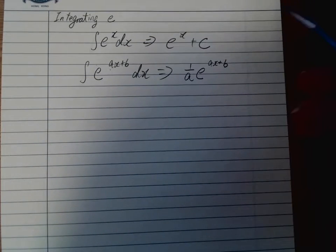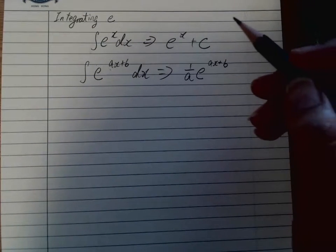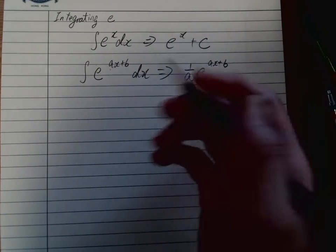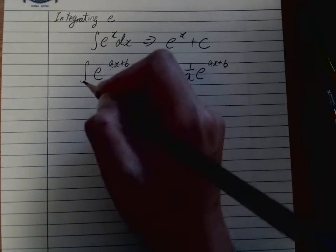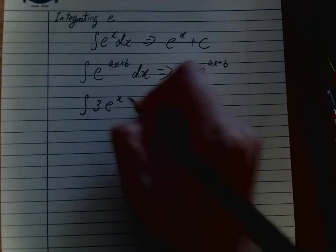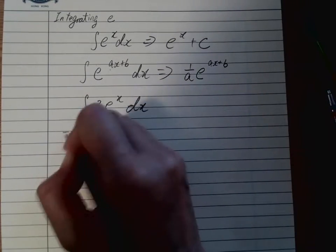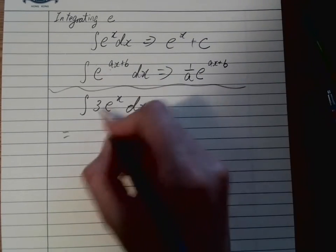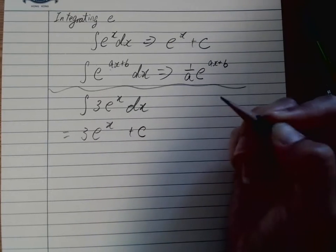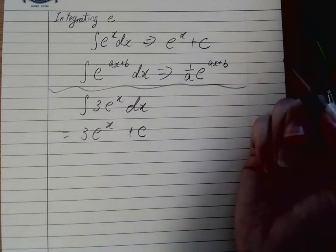Let's have a baby one first, just a simple one. So we have integrating 3e^x dx, something like that. So if that is the case, we will have the 3 staying there, and then e^x plus c. 3 is a constant, so we leave it as it is.